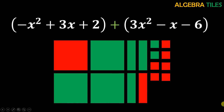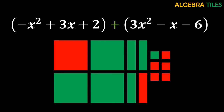Here is a very important concept when working with algebra tiles. Whenever you have a positive and a negative tile — a green and a red tile of the same size — together, that is known as a zero pair, because they cancel each other out and their value is zero. Whenever you have same-size tiles of different colors in your model, you pair them up and remove them from your model.